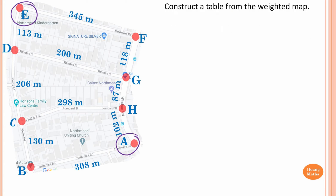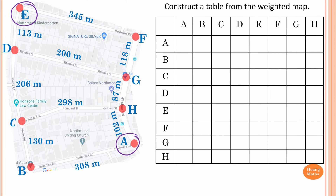Construct a table from the weighted map. So from A: A to A, A to B, A to C, A to D and so on. From A to A there is no weighting, so we leave it blank. From A to B the weighting is 308.